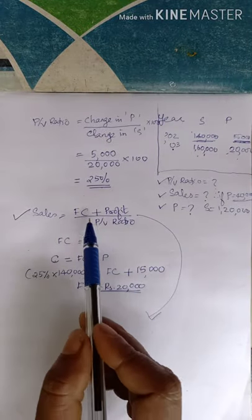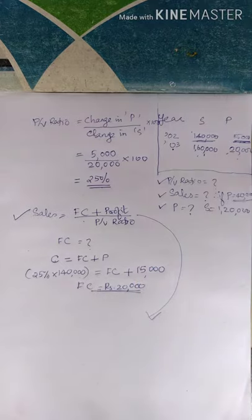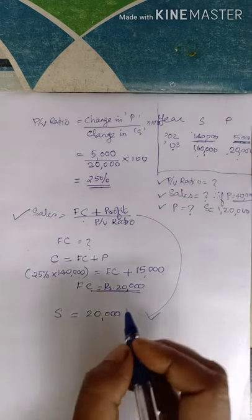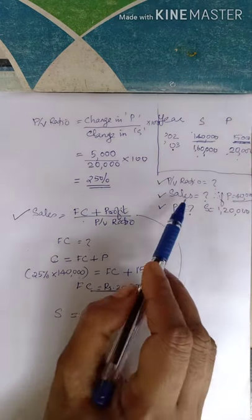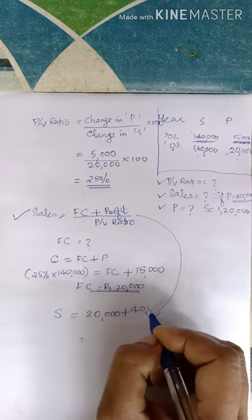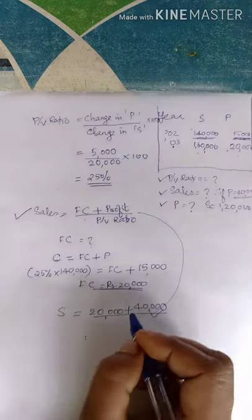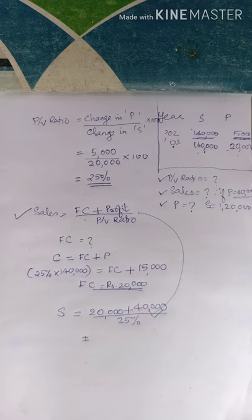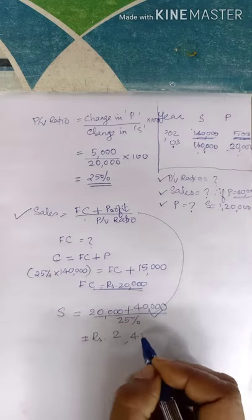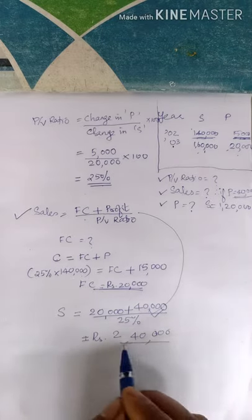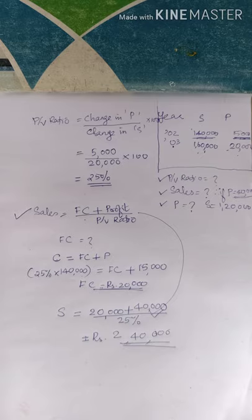Using the formula: sales equals fixed cost plus profit divided by PV ratio. Fixed cost is Rs. 20,000 plus desired profit of Rs. 40,000, giving Rs. 60,000, divided by 25%. Therefore, sales required to earn a profit of Rs. 40,000 is Rs. 2,40,000.